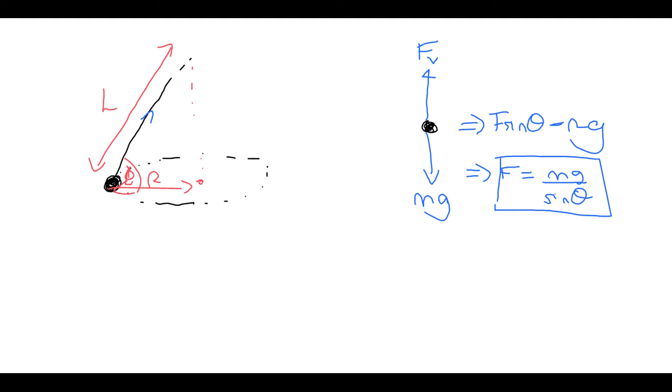But what we also know is if it's going in circular motion, that the horizontal component or F cos theta must be equal to the centripetal force, because it's going in a circle. So we've got like this.